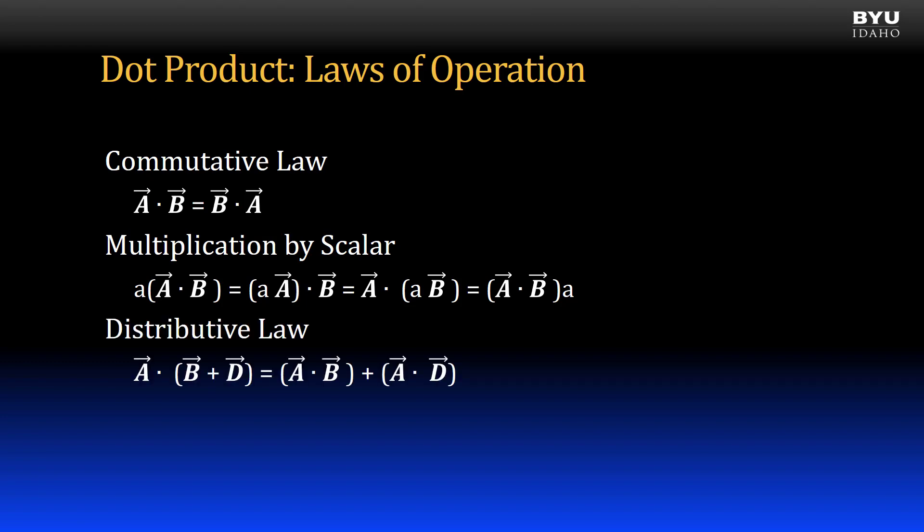Dot products also follow the distributive law. In other words, we can add two vectors together and then do their dot product, or we can leave them apart, do their dot product separately, and add them at the end.